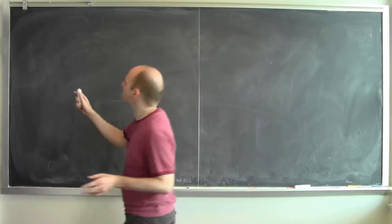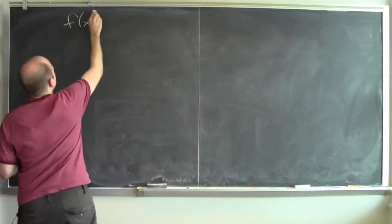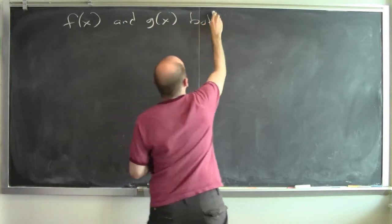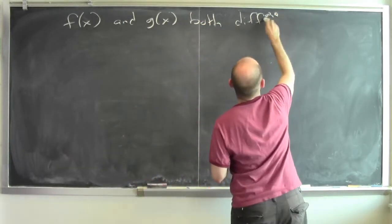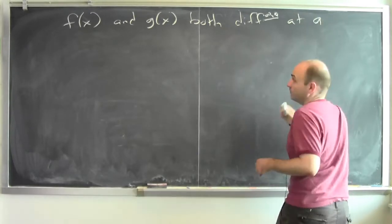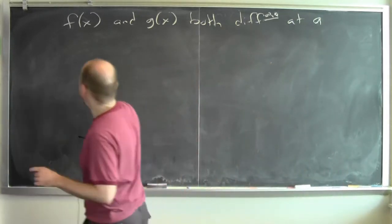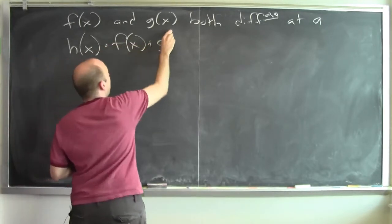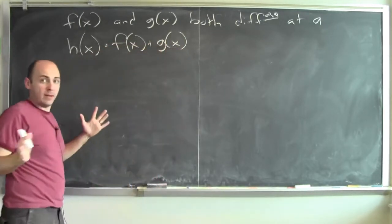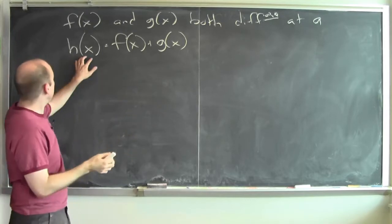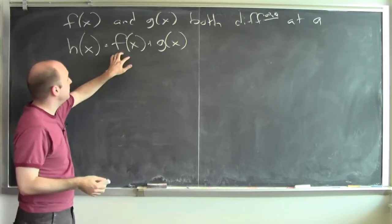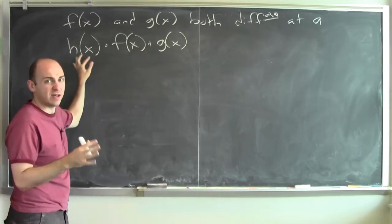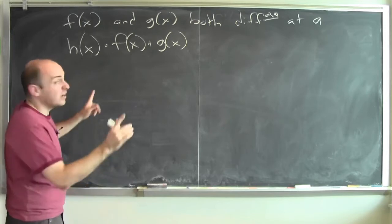I've got two functions, f of x and g of x, and they're both differentiable at a. Then I can define a new function h of x, which is the sum of f and g. To compute h of x, I just plug x into f and I plug x into g and I add together whatever f and g gives me. So that's a new function that I build from f and g.